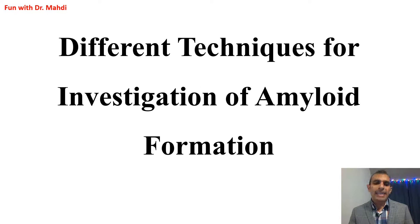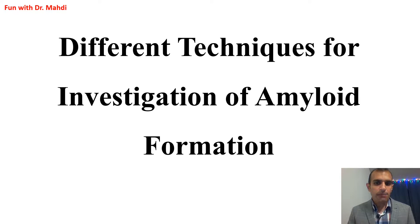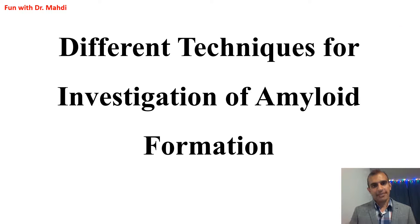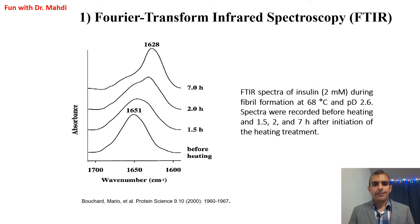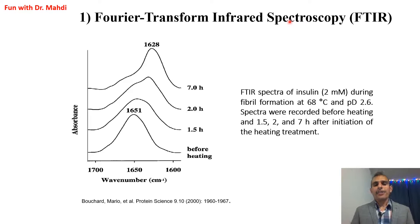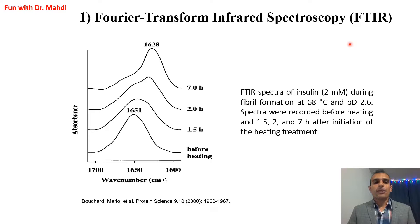There are many techniques for investigating amyloid formation, but in this video I'd like to introduce three. The first technique is Fourier Transform Infrared Spectroscopy, or FTIR. You can use FTIR to investigate amyloid formation. First, you need to make amyloid in the lab.